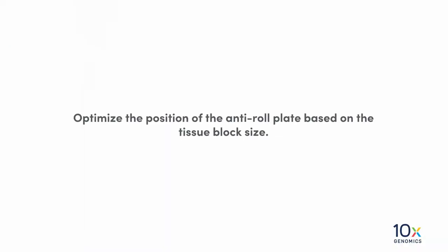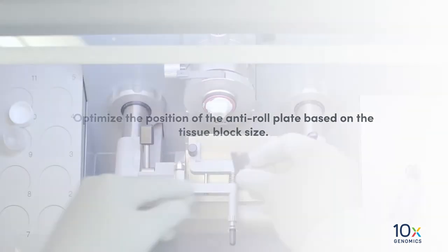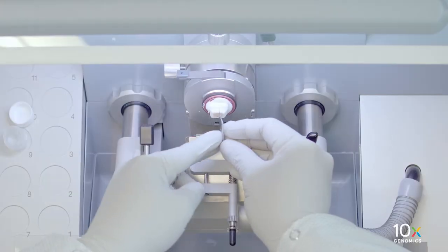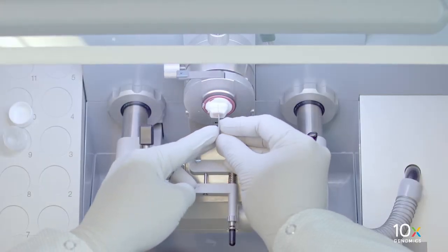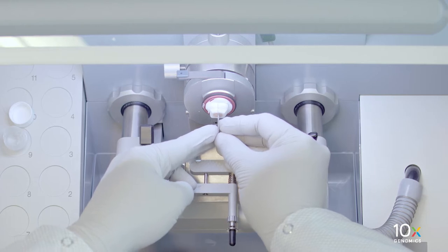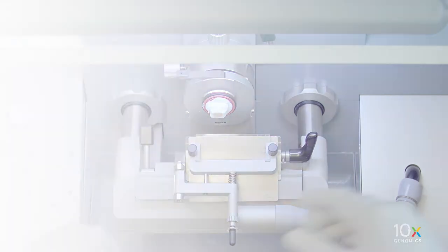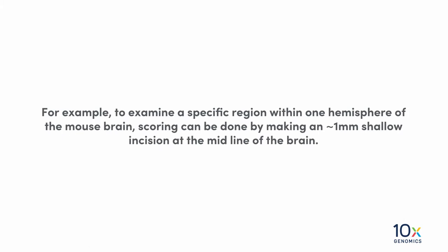Optimize the position of the anti-roll plate based on the tissue block size. To score, make a shallow incision about 1 mm deep on the cutting surface of the tissue with a pre-cooled razor blade. For example, to examine a specific region within one hemisphere of the mouse brain, scoring can be done by making an approximately 1 mm shallow incision at the midline of the brain.